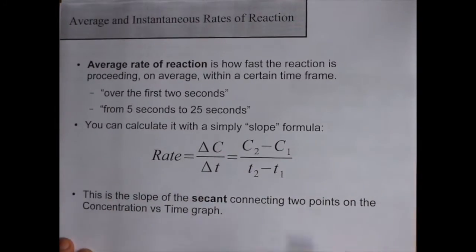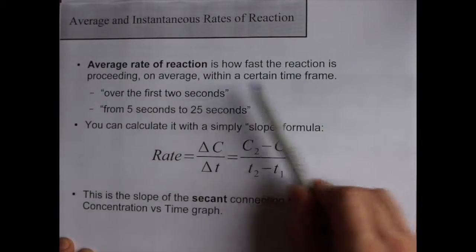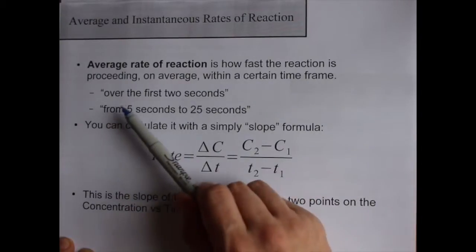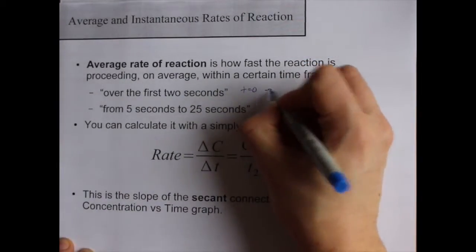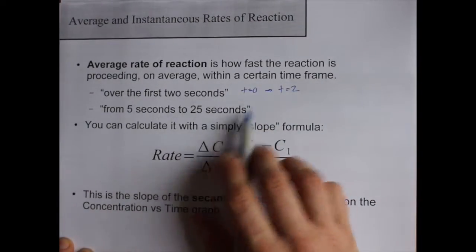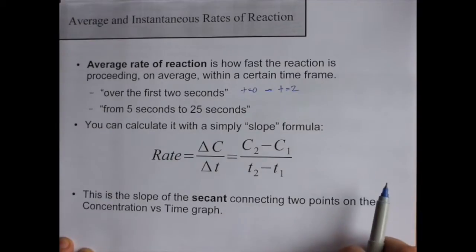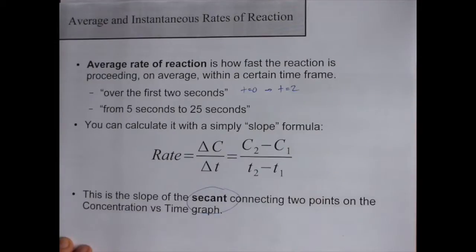This is a summary sheet that I've made for you. Average rate of reaction is how fast the reaction is proceeding within a certain time frame, like over the first two seconds, that's T equals 0 up to T equals 2. From 5 seconds to 25 seconds is even more obvious. I've been using this formula over and over again, and the word was secant for the slope between two points.